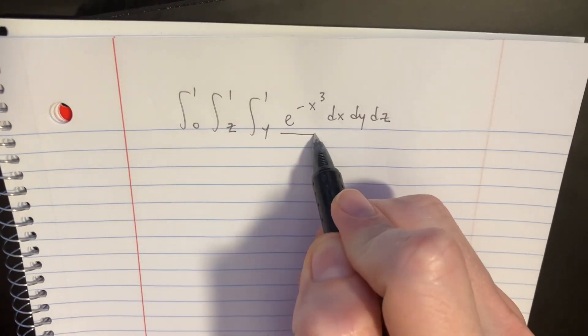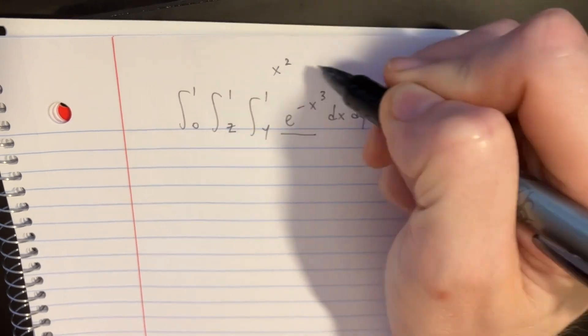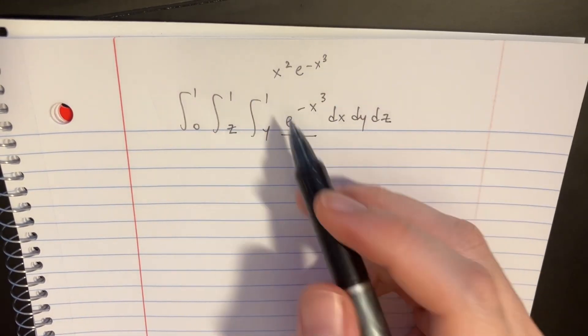When we see this kind of integral, we would imagine the ideal situation to be x squared e to the negative x to the third there. Now we can integrate that easily.